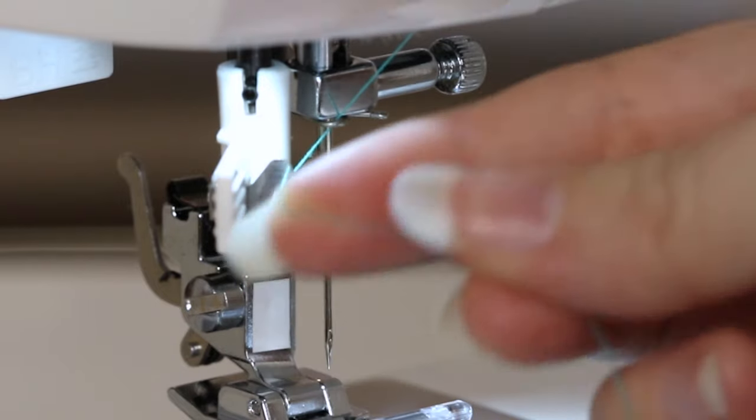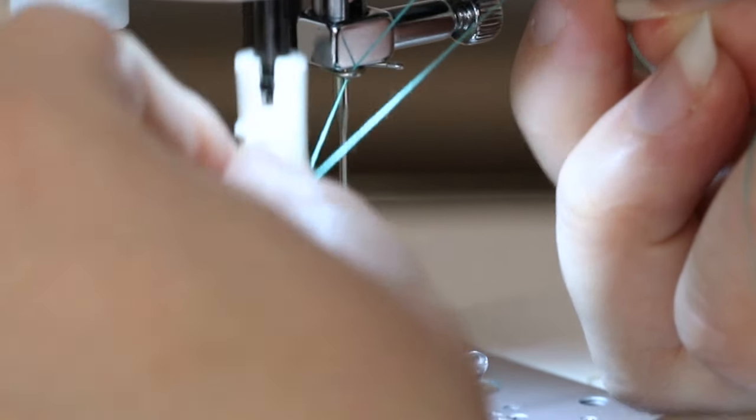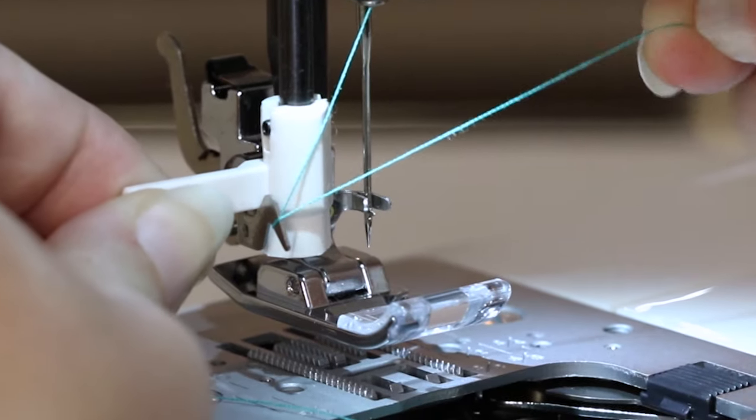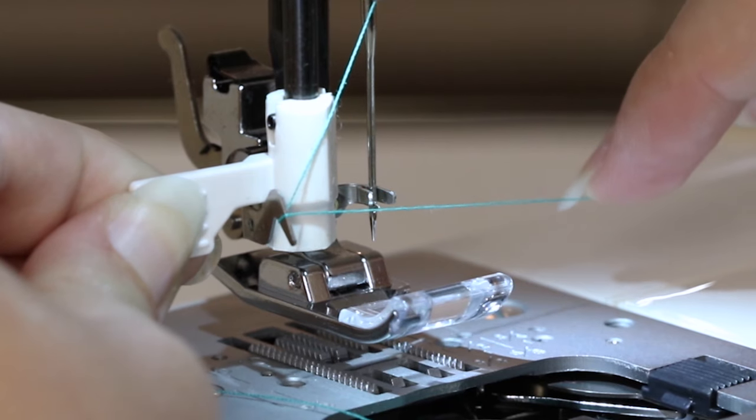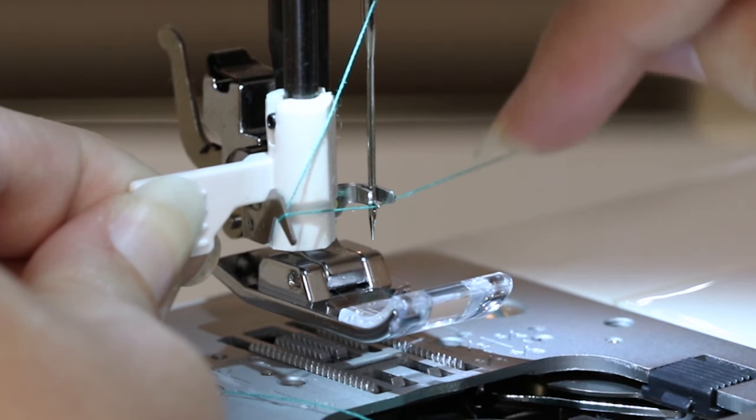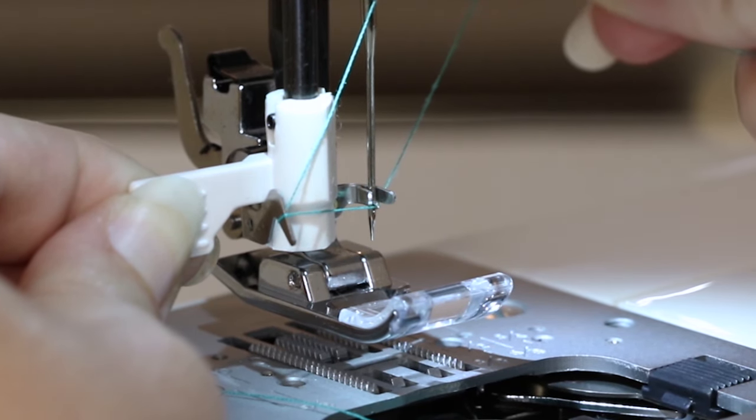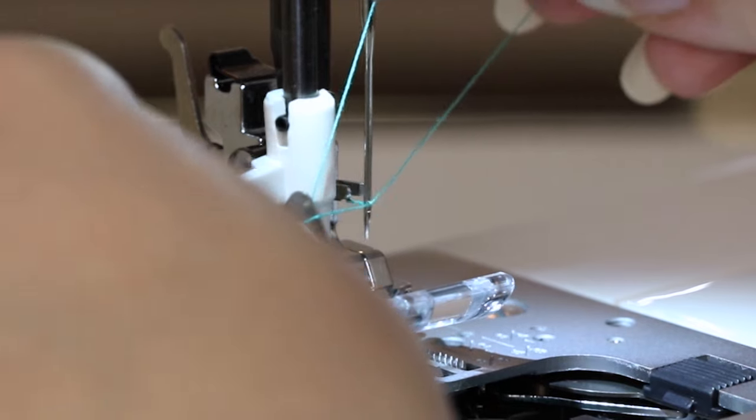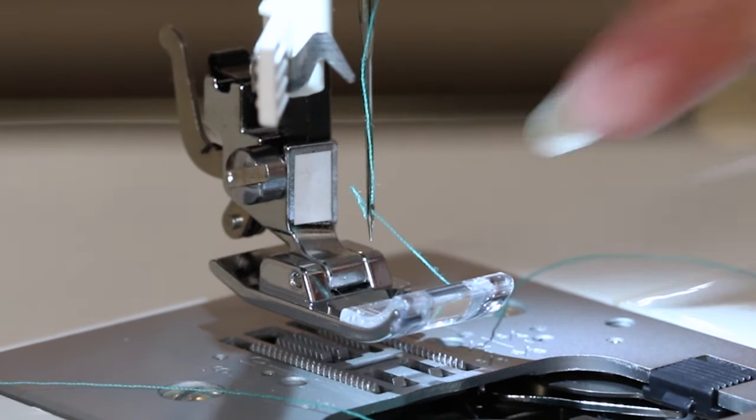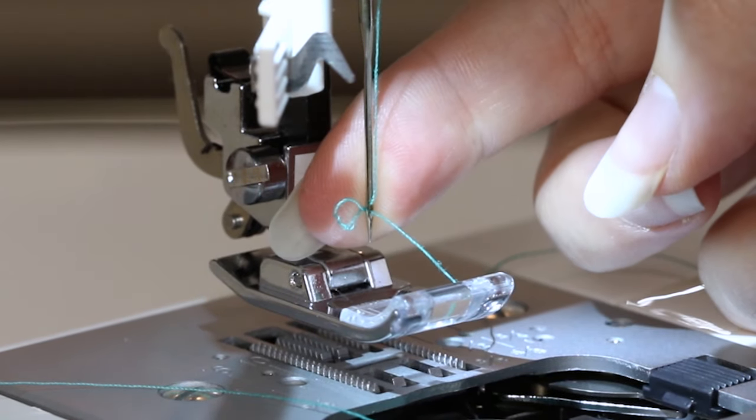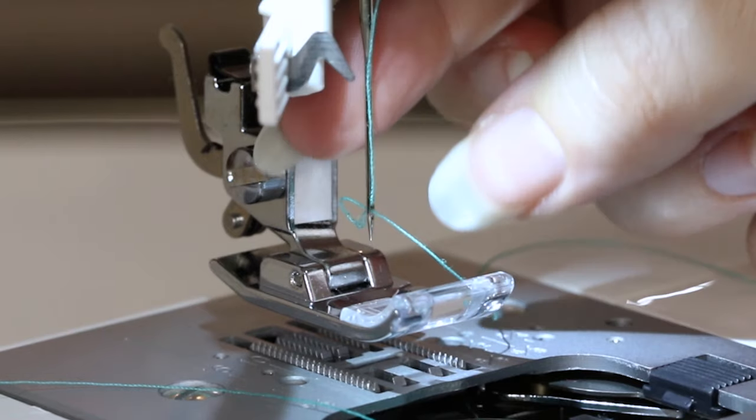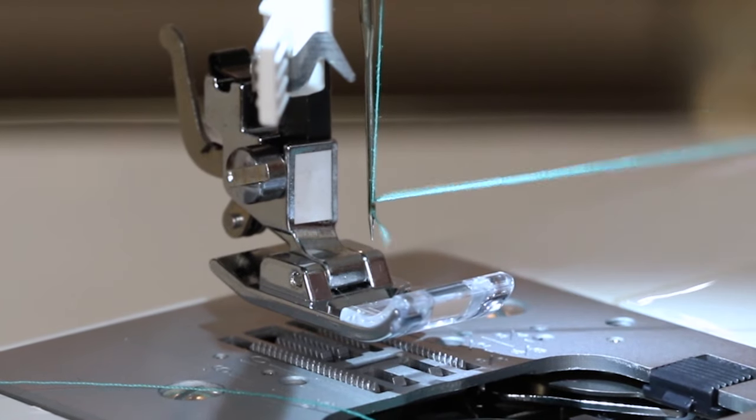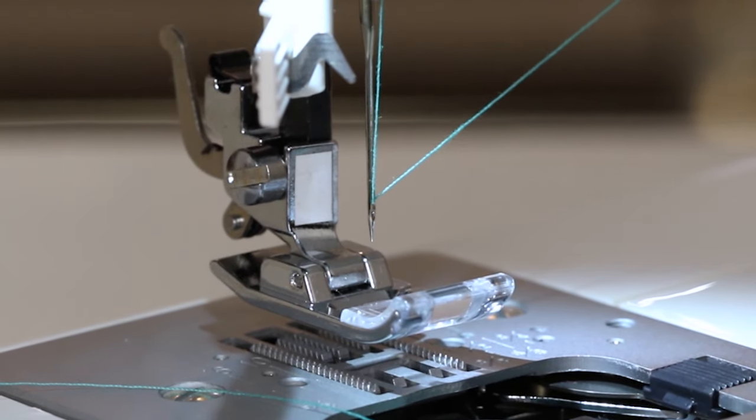Bring the thread under the hook on the built-in needle threader. Bring down the built-in needle threader and move it so that the prongs encompass the needle. Bring the thread under the prongs. Lightly hold the thread to give it some tension and slowly release the built-in needle threader. Now there will be a loop behind the needle. Just pull that loop and the needle is threaded.